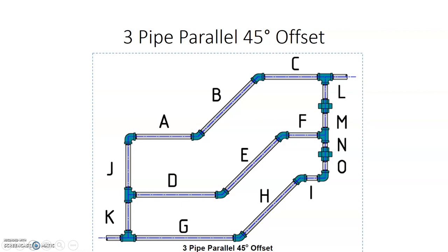In the parallel offset, our key goal is to maintain the spread between all the horizontal piping. The distance between A to center of D we want to maintain all through the offset, including where the travel pieces are. Between pipe B and E we want to maintain that same spread, and when we go back horizontal again between pipe C and F. So if the center-to-center measurement between A and D was 12 inches, we maintain 12 inches between B and E and 12 inches between C and F.